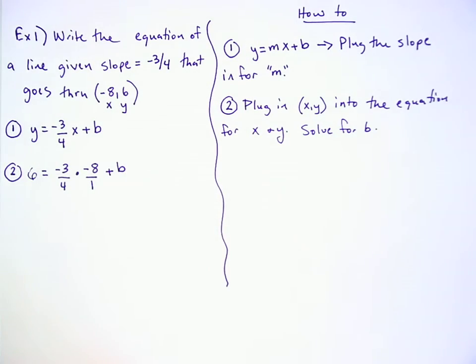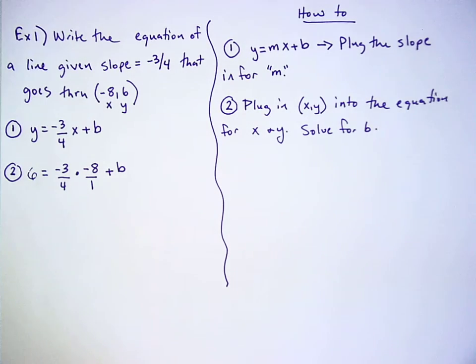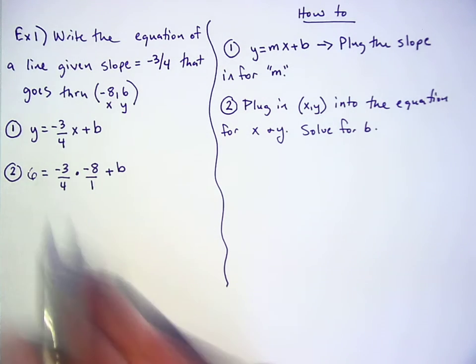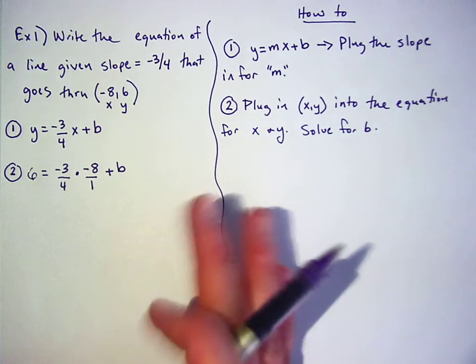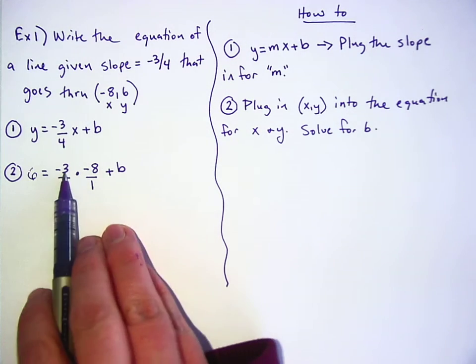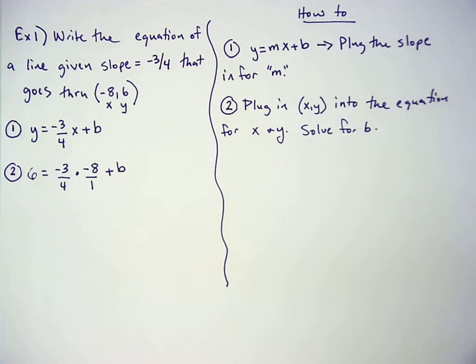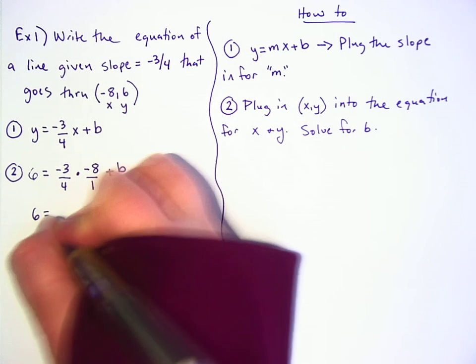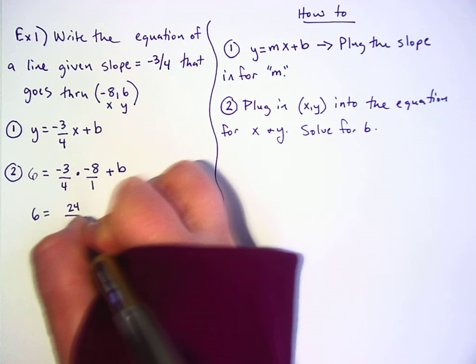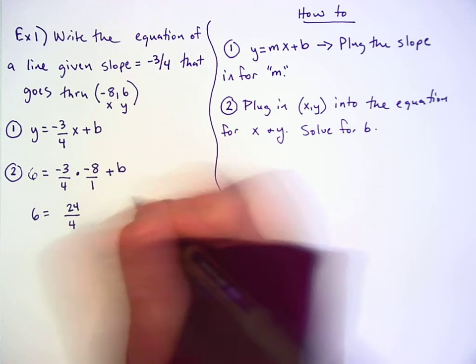Okay. So how do we multiply fractions again? That's division. Don't you multiply the denominators and the denominators? Yep. You can multiply across, or you can reduce it as you go. What do you guys think? Should we just multiply across? Yeah. All right. What's negative three times negative eight? Negative 24. No, a negative times a negative makes a positive. So it's positive 24 over, what's four times one? Four. Four plus b.